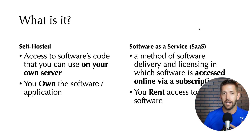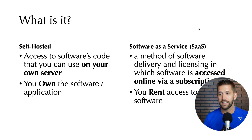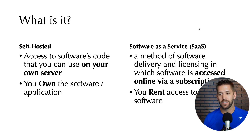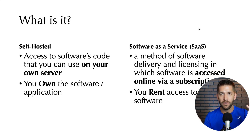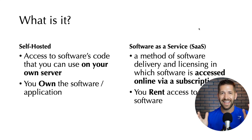SaaS, on the other hand — software as a service — is a method of software delivery and licensing where you can access the software via an online subscription. You're basically renting access to the software. So the key difference here is renting versus owning. If you think about having an apartment versus owning a house — maintenance and upkeep versus calling the landlord to fix a toilet — a lot of the same mentality applies on the software side as well.